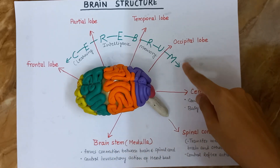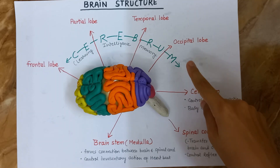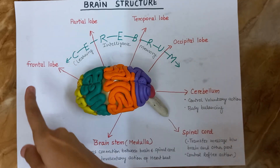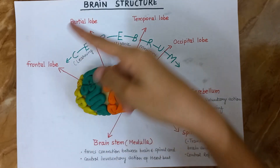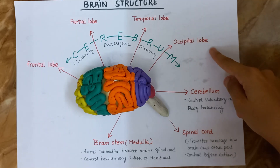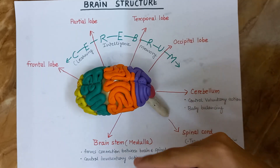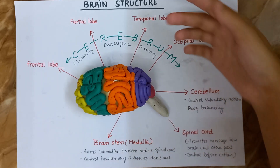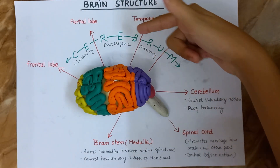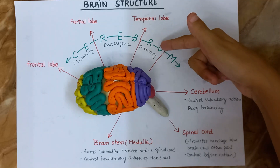Cerebrum is the largest part of the brain. It consists of frontal lobe, parietal lobe, temporal lobe and occipital lobe. Cerebrum is responsible for learning, intelligence and memory.